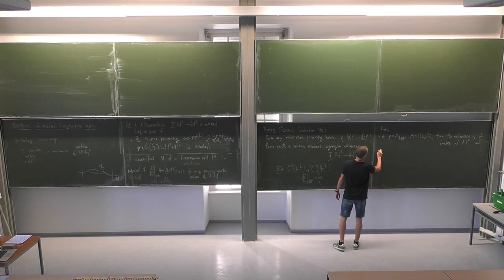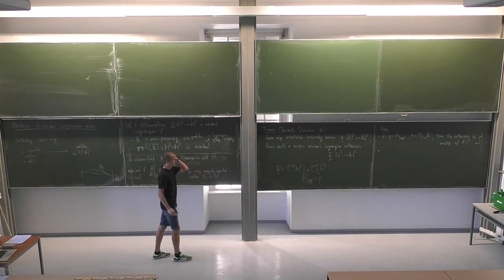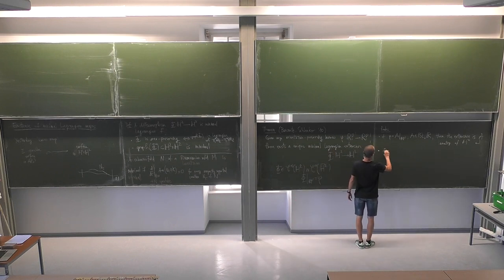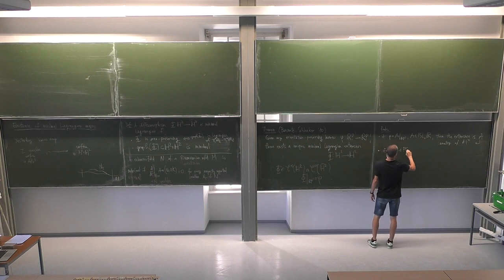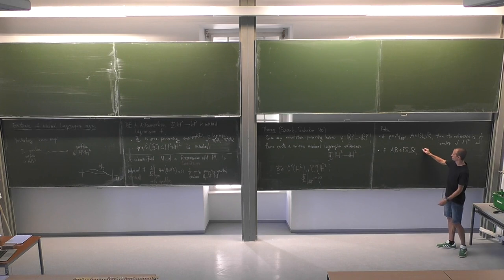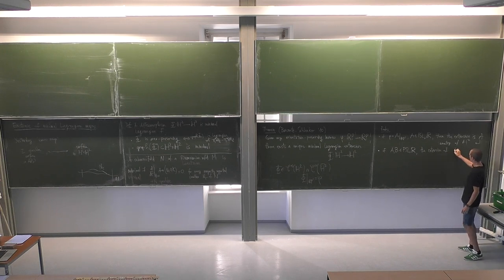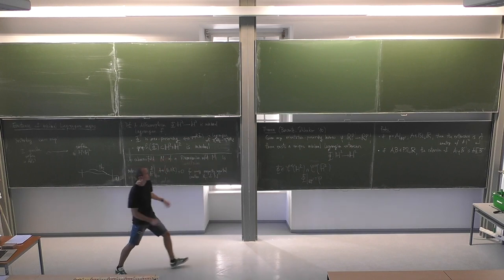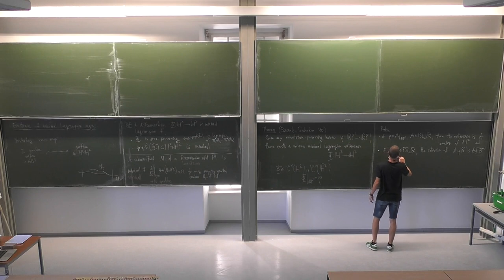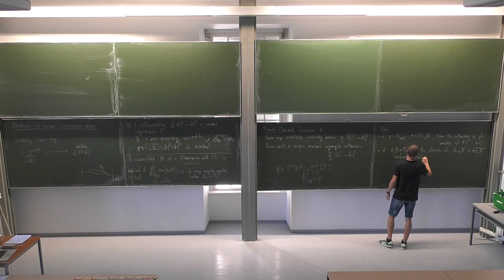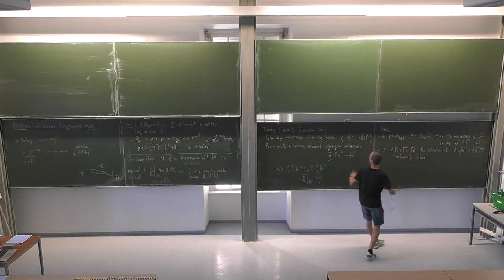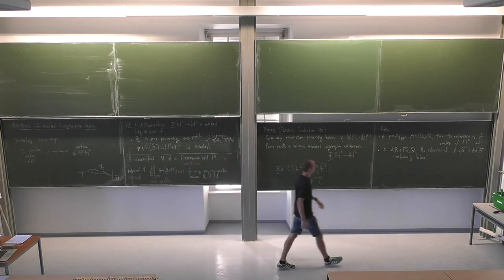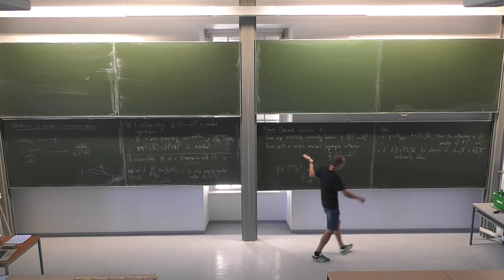There's actually more: this is what is called a conformally natural extension. Meaning that if we take A, B in PSL2R and any orientation-preserving homeomorphism phi of the boundary, the extension of A∘phi∘B⁻¹ is A∘Phi∘B⁻¹. If we compose the boundary data with elements of PSL2R, the extension is composed accordingly. This is what conformally natural means. This condition is invariant by isometries, so by uniqueness it follows automatically.